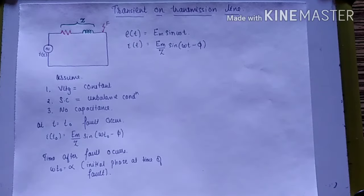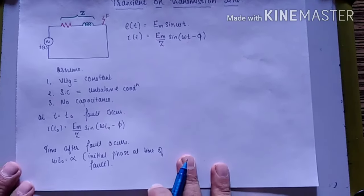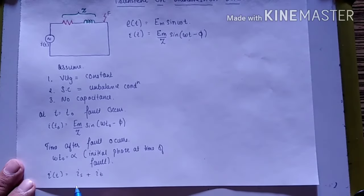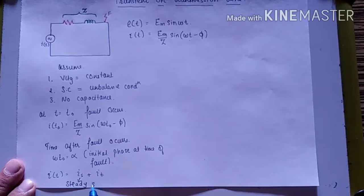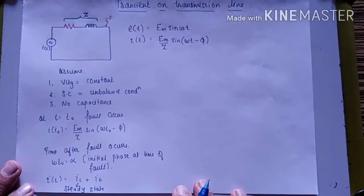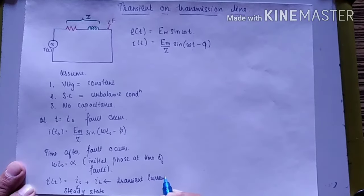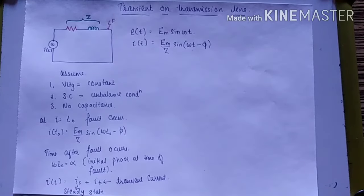The total current I(t) = Is + It, where Is is the steady-state current and It is the transient current. During the fault, a transient current is produced — this is the important point.